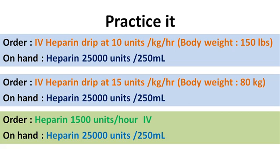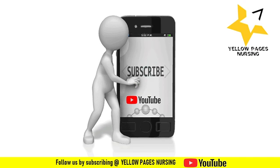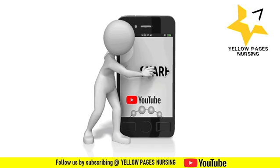So there we go with drug calculation of injection heparin. This is a very easy calculation — all we need to remember are the formulas. We discussed three different types of formulas for three different types of calculations. If you find this video useful please like it, share it, subscribe, and do not forget to hit the bell icon to receive instant notifications. Thanks for watching and have a nice day.